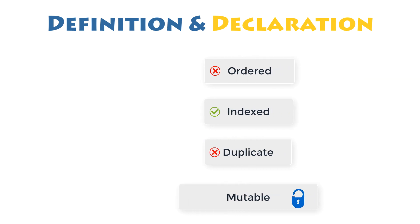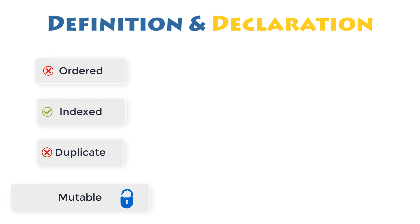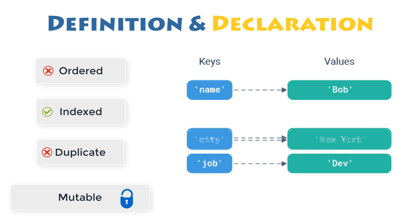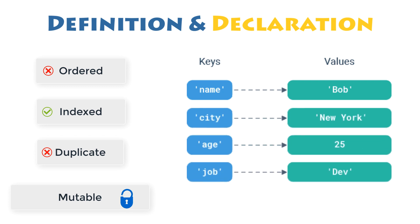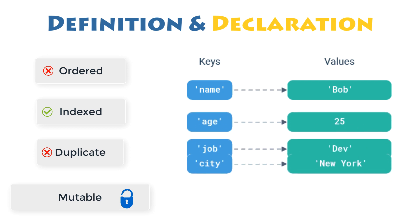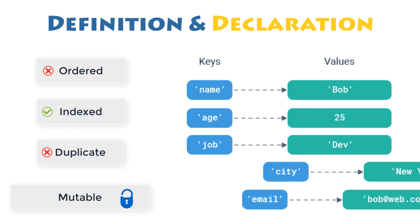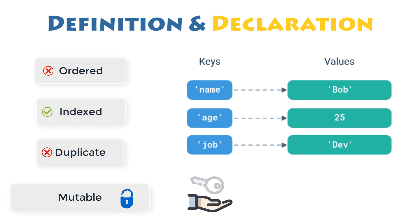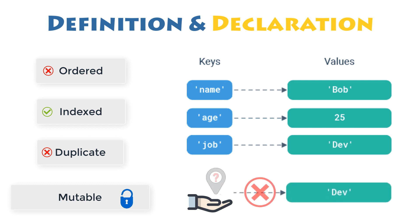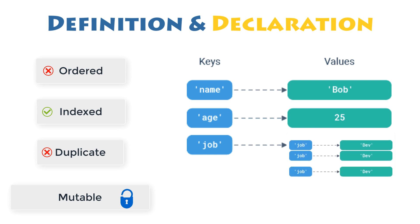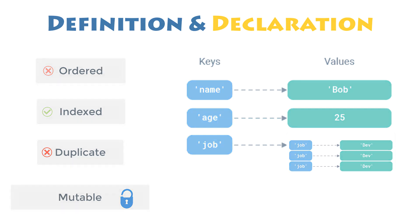The important properties of Python dictionaries are as follows. Dictionaries are unordered — items stored in a dictionary are not kept in any particular order. Dictionaries are mutable — they can be changed in place, and can grow and shrink on demand. Items are accessed by keys, not by their position. Dictionaries can also be nested — a dictionary can contain another dictionary, and so forth.